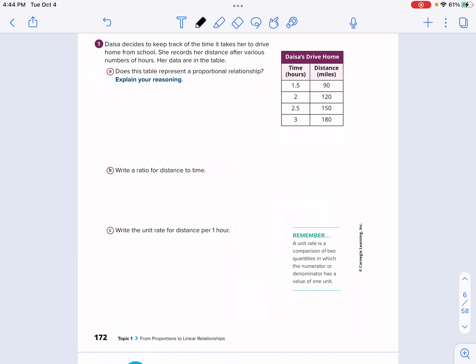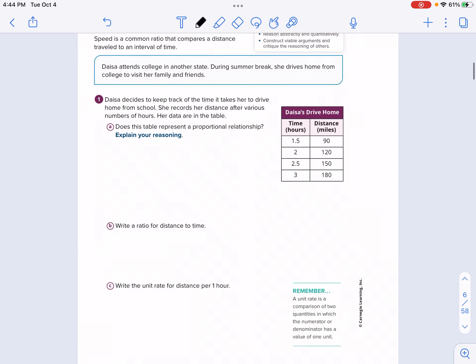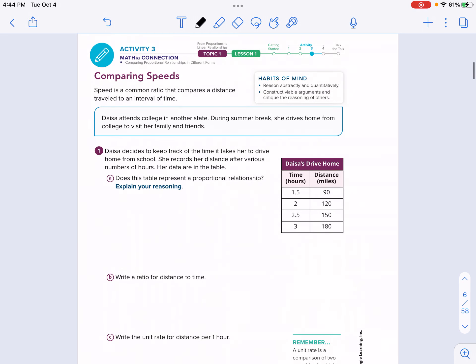All right, we are starting on page 172. This is activity three. We're going to complete activity three, four, and five. I'm going through some problems, not all the problems, and then we'll be finishing up with the assignment schedules for this lesson.